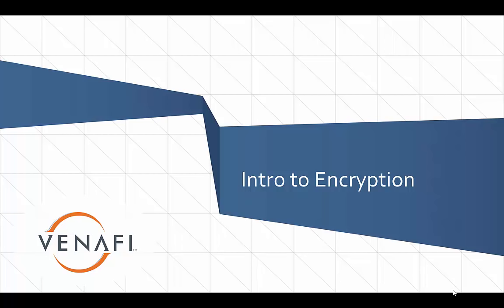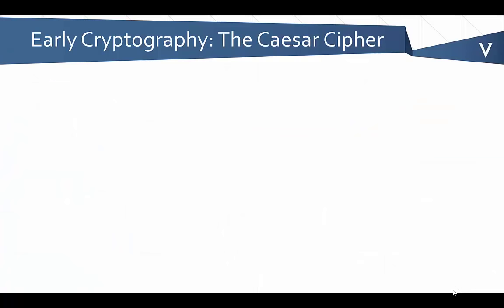To start this introduction, we're actually going to start with a simple example, something that you may have done in school. It's called the Caesar cipher, and it was actually invented by Julius Caesar years and years ago.